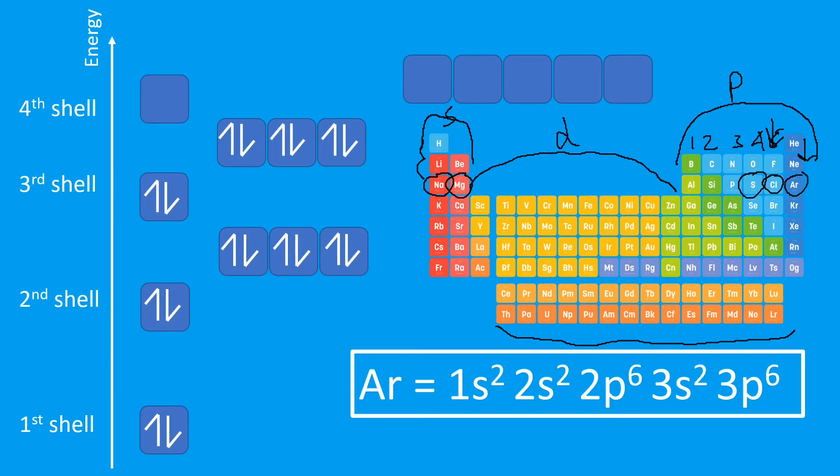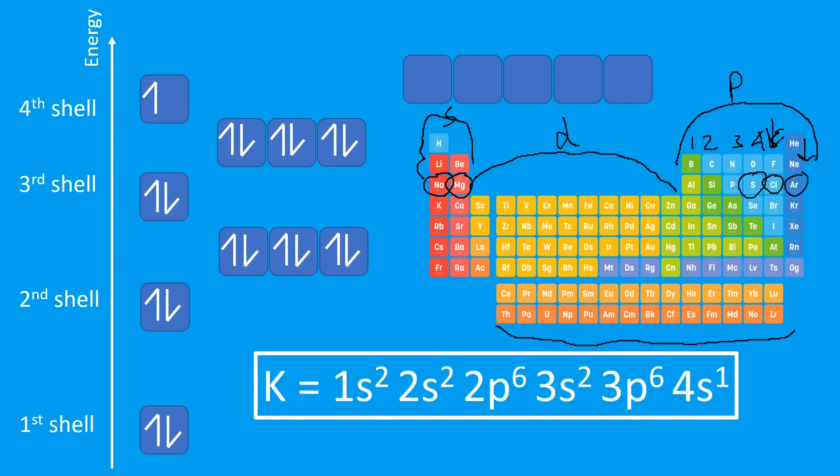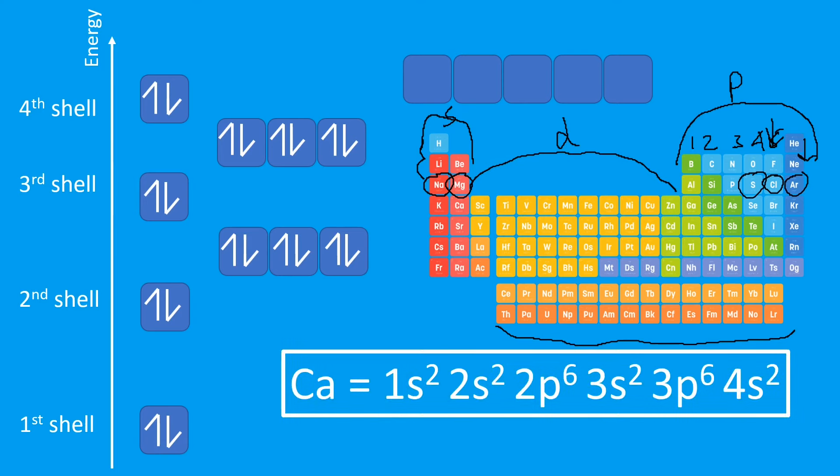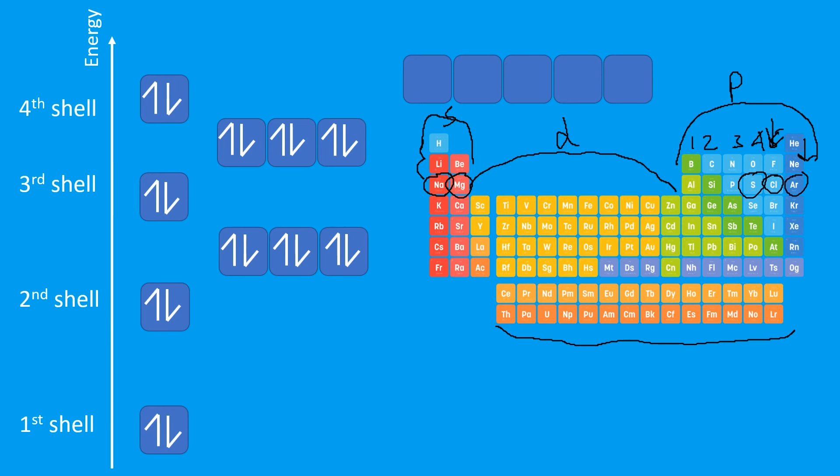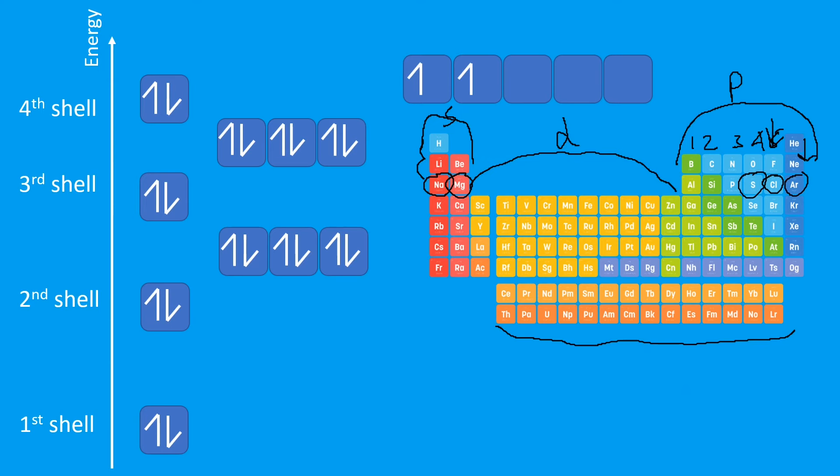Now this is where it starts to get a little confusing because the third shell does have a d subshell. However, the 4s, the fourth shell here, the 4s orbital is actually slightly lower in energy than the 3d. So that means it fills first according to Aufbau's principle. So the next element, which is potassium, is 4s1. So the d subshell hasn't started to fill yet. And then we'll go to calcium, which is 4s2, because they've paired up. That's the lowest energy shell or the lowest orbital. Then the d block will start to fill, so d1, d2, d3. And you'll notice again that they are not pairing up until they absolutely have to.